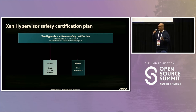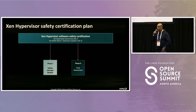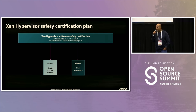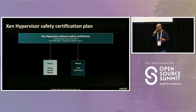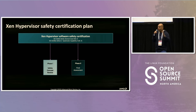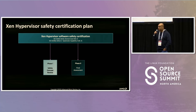The assessment happens in two phases. The first phase is a concept approval, where we present our organizational process, safety management, and the overall safety concept — the target use case of the Xen hypervisor for isolating safety workloads from non-safety workloads. That safety concept and architecture is assessed by the third-party company. The second phase is the detailed test assessment, where everything presented in the first phase — all verification, traceability — is assessed, completing the typical safety certification project for software.